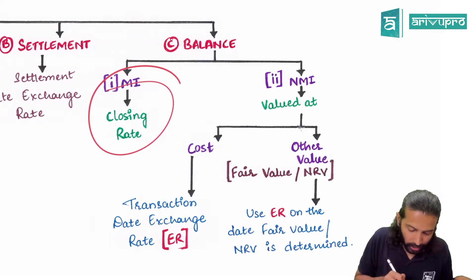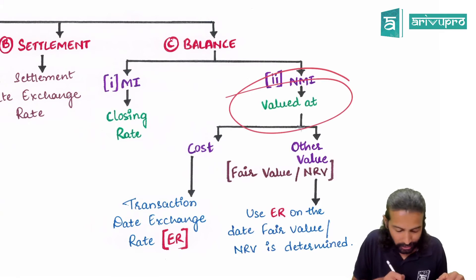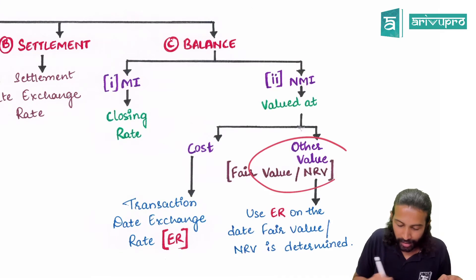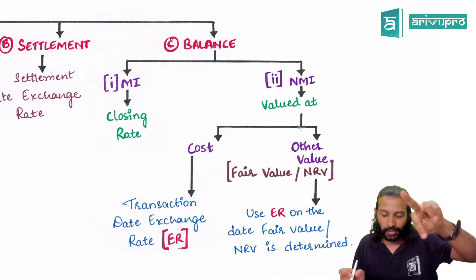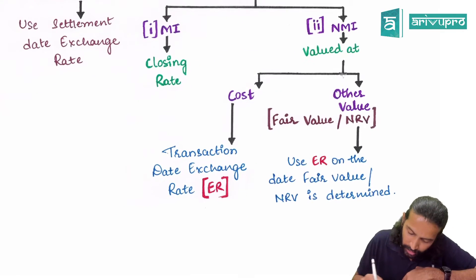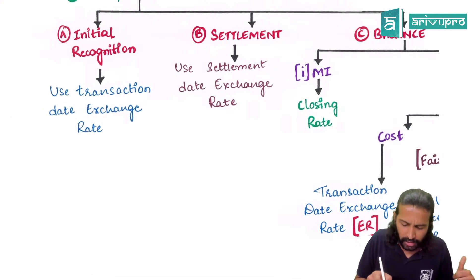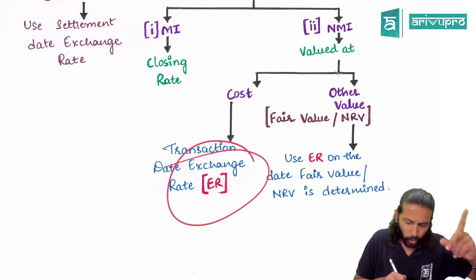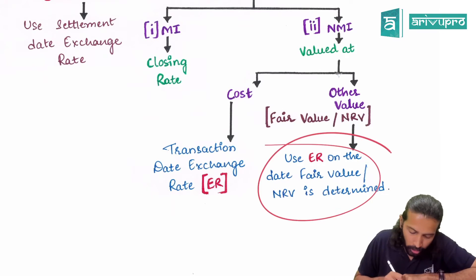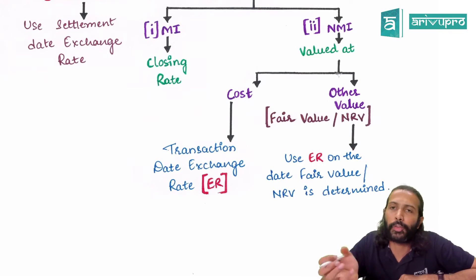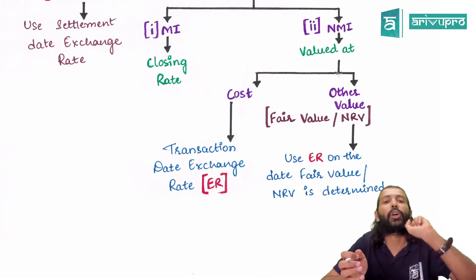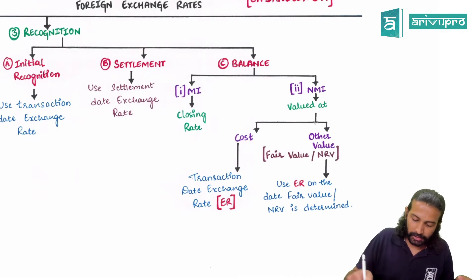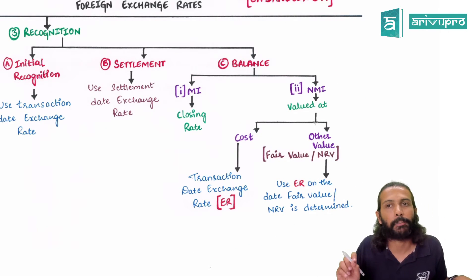If it is a monetary item, use the closing rate. For a non-monetary item, it depends on how it is valued — it could be valued at cost or at another value such as fair value or net realizable value. If valued at cost, use the same transaction date exchange rate already used — no need to restate it. However, if valuing a non-monetary item at NRV or fair value, use the exchange rate existing on the date that NRV or fair value is determined. That is the foreign currency funda.